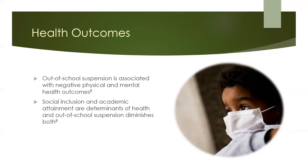Students who feel disconnected and excluded from their peers tend to have poorer health outcomes. Also, as we will talk about in a moment, academic attainment is also impacted by out-of-school suspension and is also a determinant of health. So that's another way that out-of-school suspension may indirectly negatively affect health.